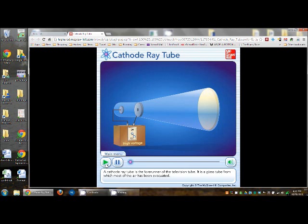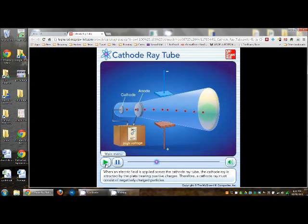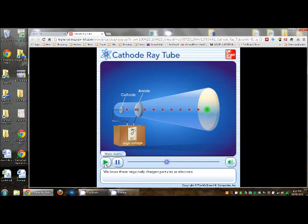A cathode ray tube is the forerunner of the television tube. It is a glass tube from which most of the air has been evacuated. When the two metal plates are connected to a high voltage source, the negatively charged plate, called the cathode, emits an invisible ray. The cathode ray is drawn to the positively charged plate, called the anode, where it passes through a hole and continues traveling to the other end of the tube. When the ray strikes this specially coated surface, the cathode ray produces a strong fluorescence, or bright light. When an electric field is applied, the cathode ray is attracted by the plate bearing positive charges. Therefore, a cathode ray must consist of negatively charged particles. We know these negatively charged particles as electrons.